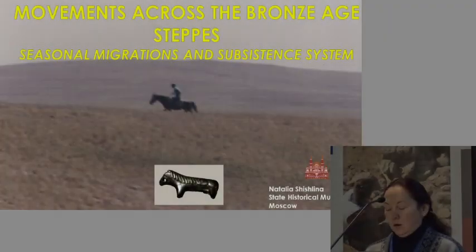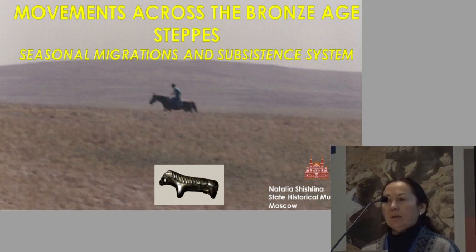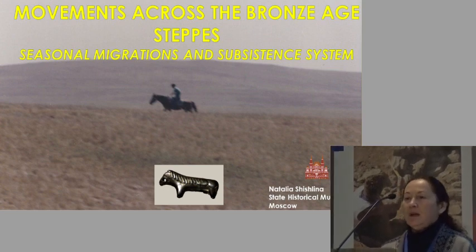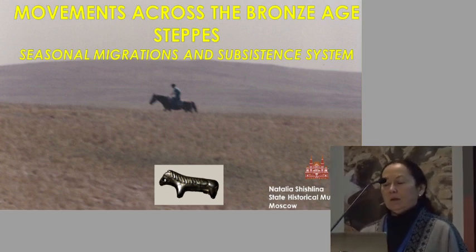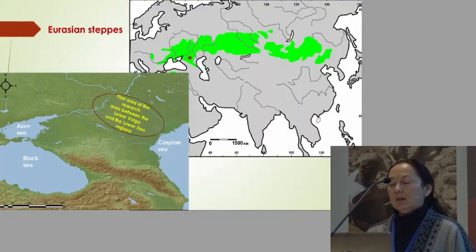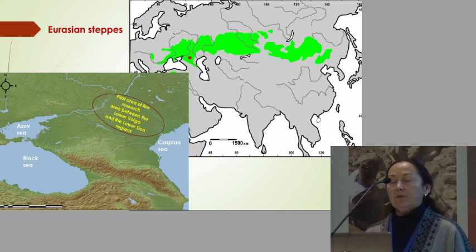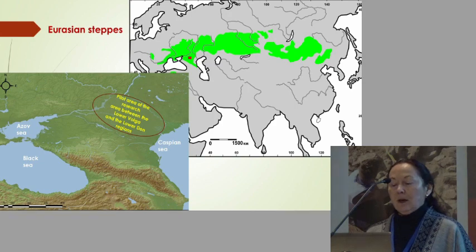Good morning dear colleagues. I'm happy to present our data on this topic, especially since many papers yesterday were devoted to this issue. I'm going to speak about seasonal migration and subsistence systems. Here on the map you can see that the green colour marks the vast Eurasian steppe, but I'm going to speak about data from the pilot area, which is the steppe between the Low-Volga and Low-Don area.